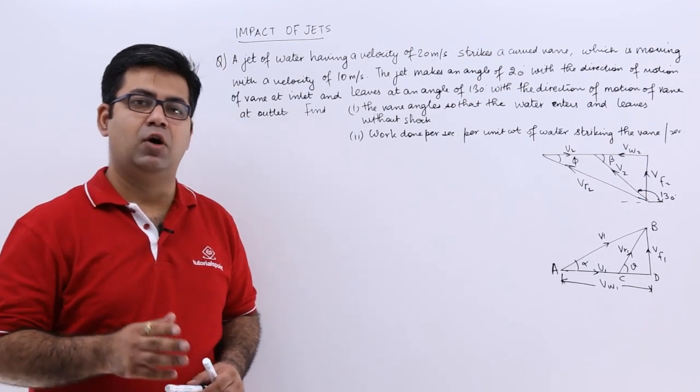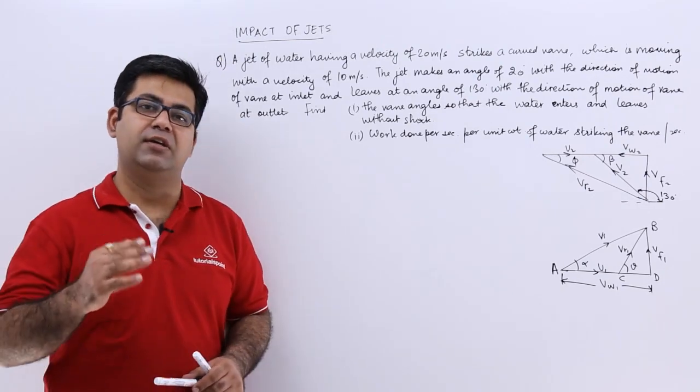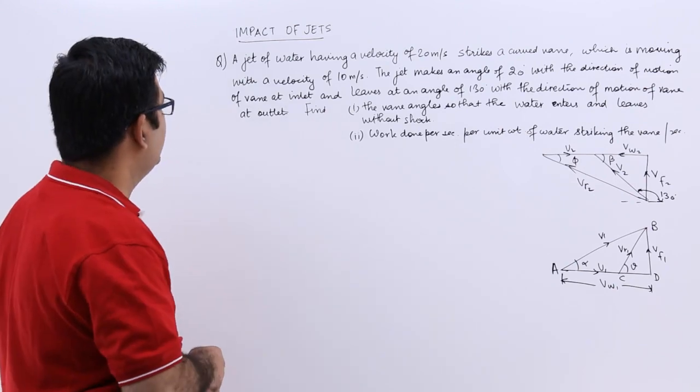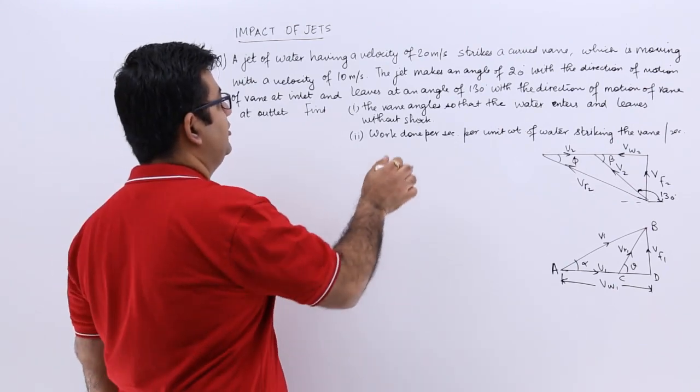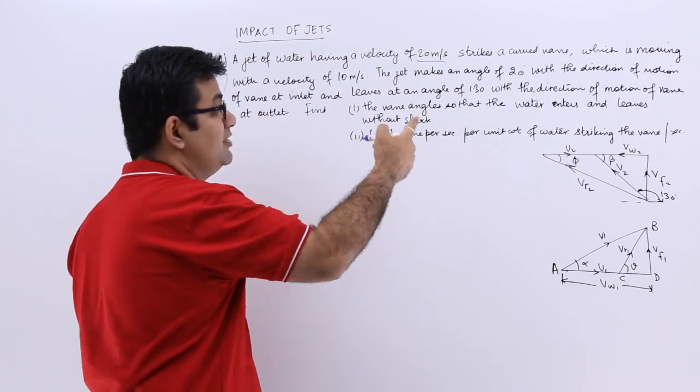Let's look at an example on the topic of unsymmetrical curved moving plate. The question says we have a jet of water which has a velocity of 20 meters per second, so this is V1.